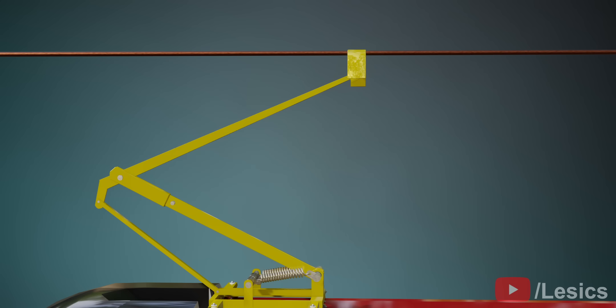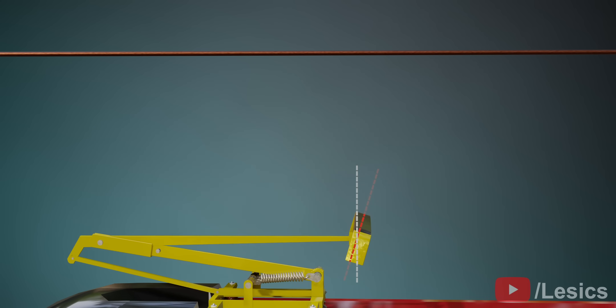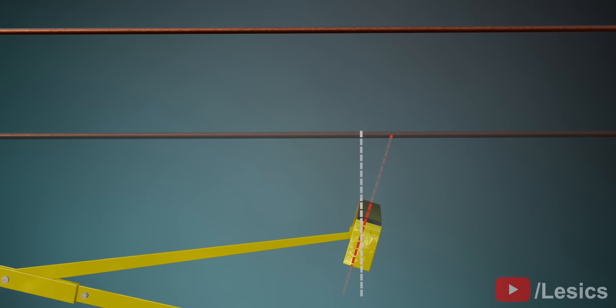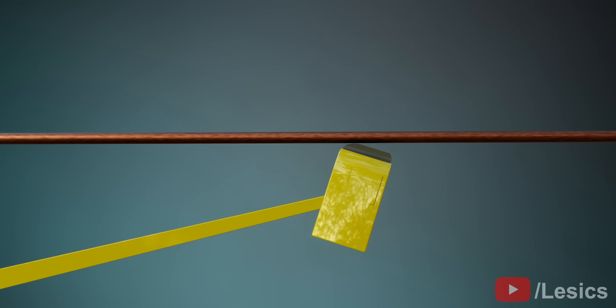However, the angle of the collector head changes since it's connected to the upper arm. This is a big issue. Such rotation will make the contact between collector head and overhead line quite ineffective. Can you identify a potential solution?